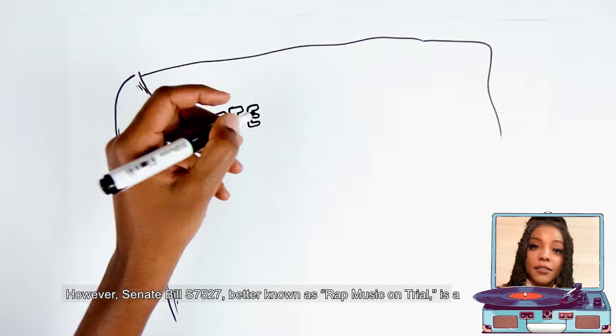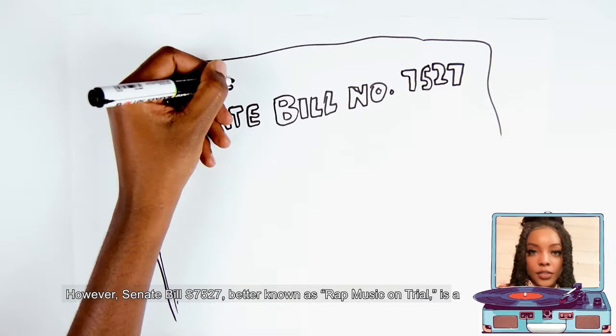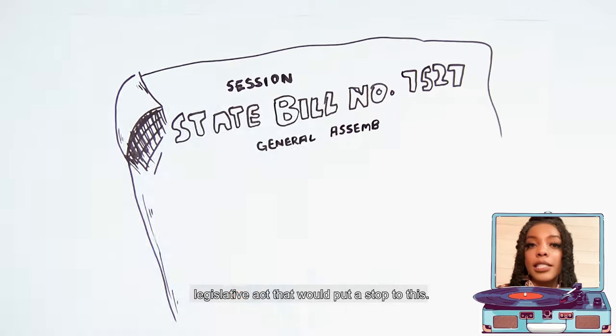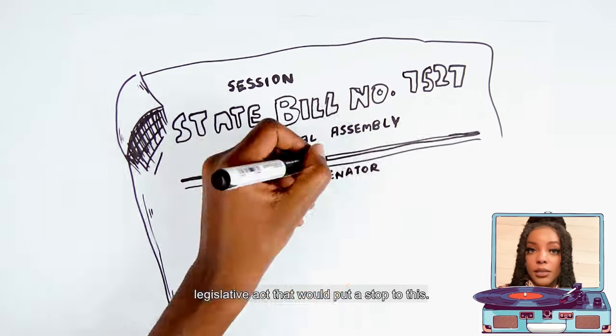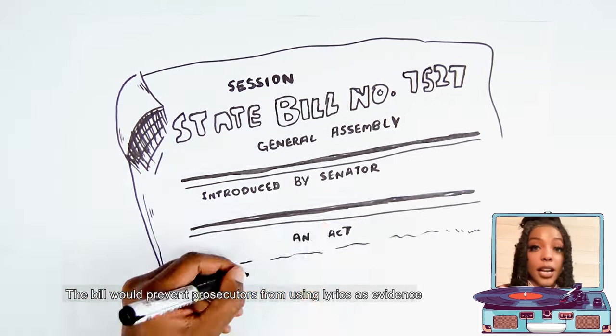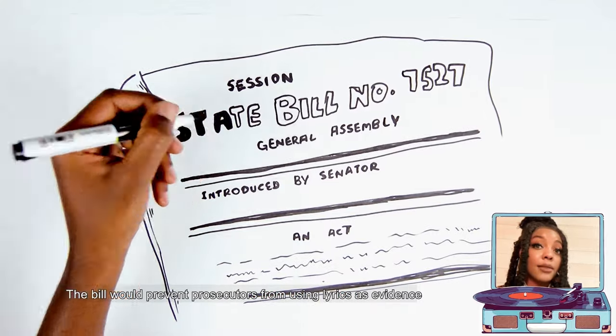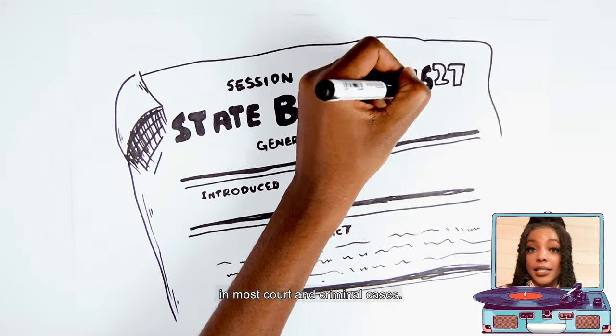However, Senate Bill S-7527, which is better known as the Rap Music on Trial Bill, is a legislative act that would put a stop to this. The bill would essentially prevent prosecutors from using lyrics as evidence in most court and criminal cases.